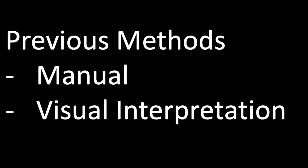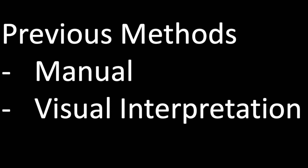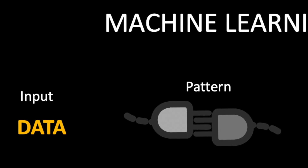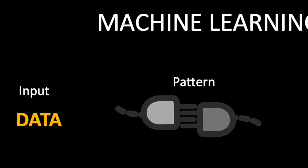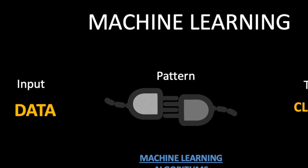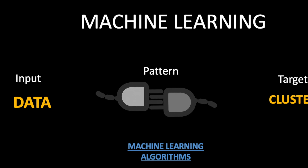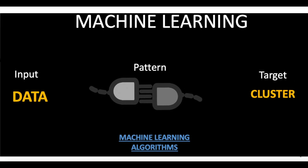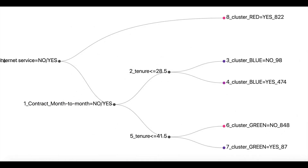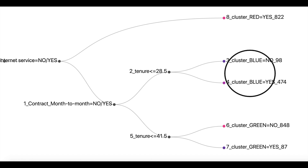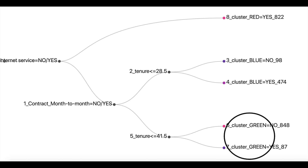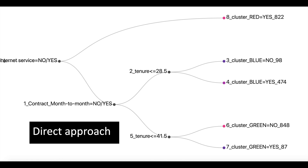In the previous methods the interpretation approach was manual — we had to manually look at visualizations to understand the meaning of the clusters. So enter machine learning, which will save you from stressing your eyes on visualizations to identify cluster meaning. We use the columns in the data as input and the clusters as output, and machine learning finds the pattern connecting them. One widely used algorithm is the decision tree, shown here. We see that customers who do not have internet services are classified as the red cluster, and those who have internet digital services with less tenure are classified as the green cluster. This is the same result as the previous method, but obtained directly without any need to interpret visualizations.